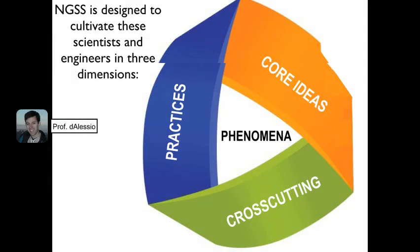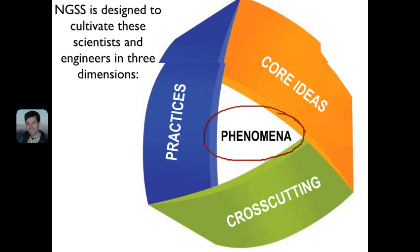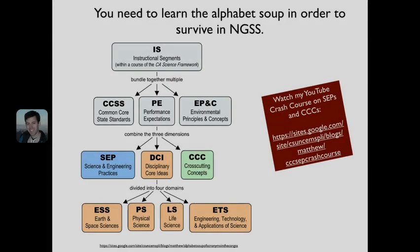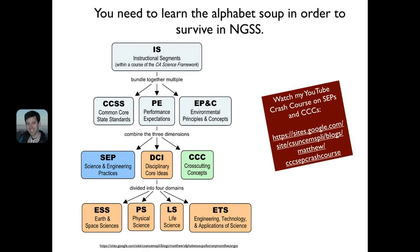NGSS cultivates students as scientists and engineers in three different dimensions, embodied in the NGSS logo with its famous colors of blue, orange, and green. The whole purpose is that students use those three dimensions to understand phenomena — what's going on in the world around them. Unfortunately, NGSS is kind of an alphabet soup, and you really do need to know what all these letters mean in order to survive in NGSS.